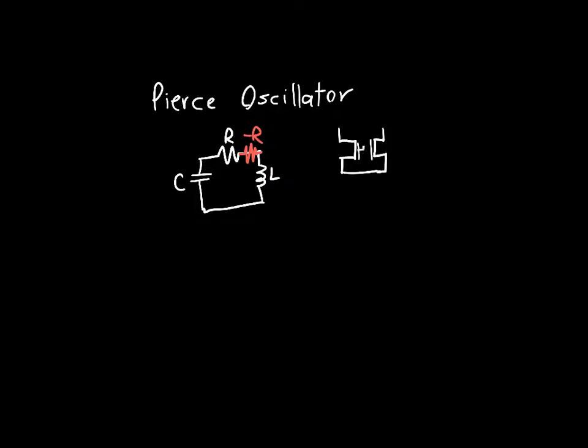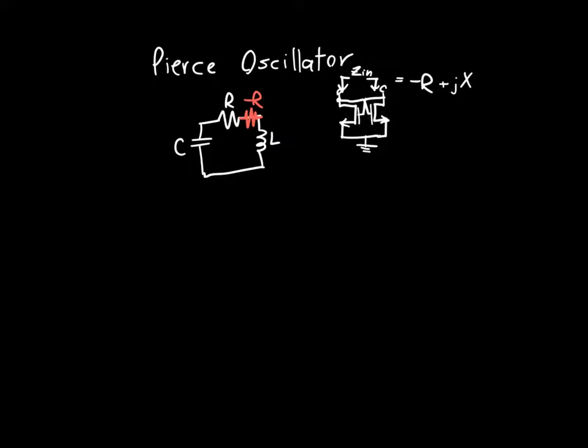By properly configuring two transistors, in this case they're NMOS but they can be PMOS transistors, you can achieve a small signal input impedance that has a negative real part plus some reactive part, and that's generally capacitive. But the cross-coupled pair uses two transistors, so is there any way to achieve a negative impedance with only one transistor? And it turns out that the answer is yes.